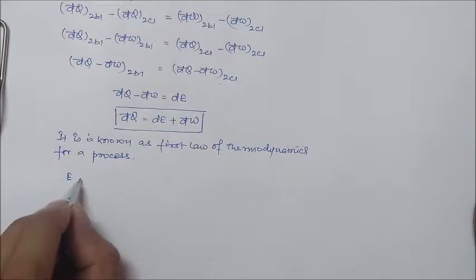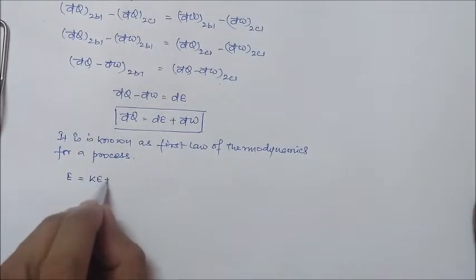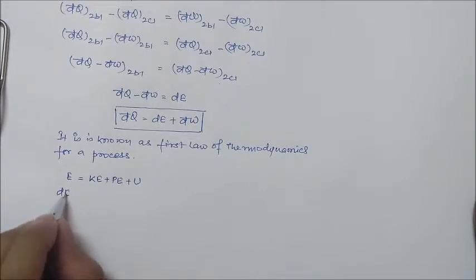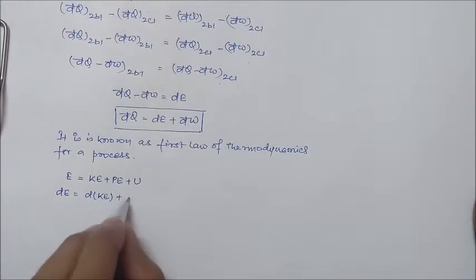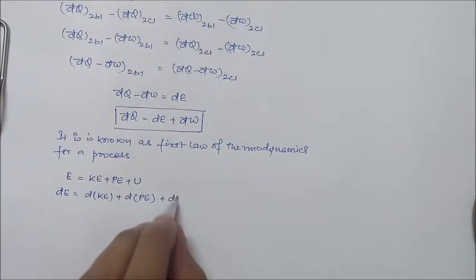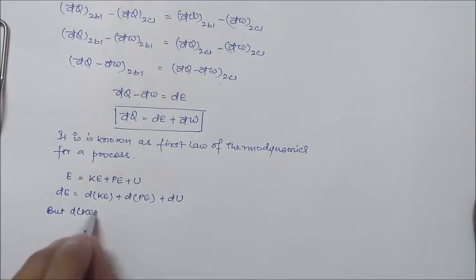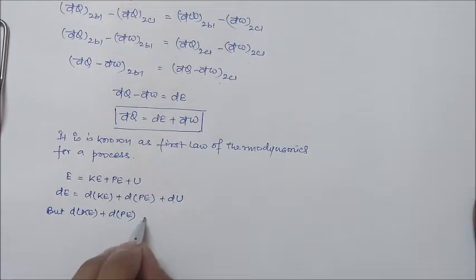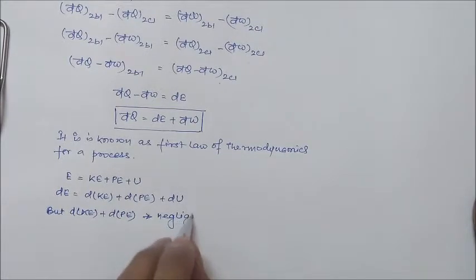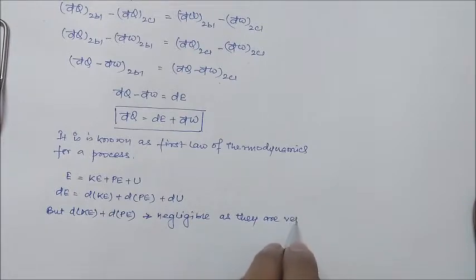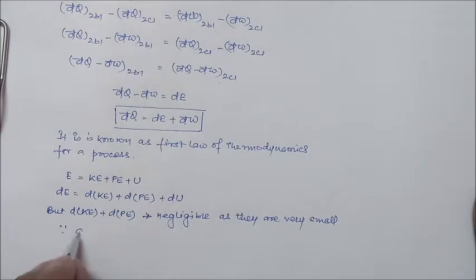This energy E consists of kinetic energy plus potential energy plus internal energy, written as dE = dKE + dPE + dU. However, dKE and dPE at the molecular level are very small and can be neglected. Therefore dE can be replaced by dU.